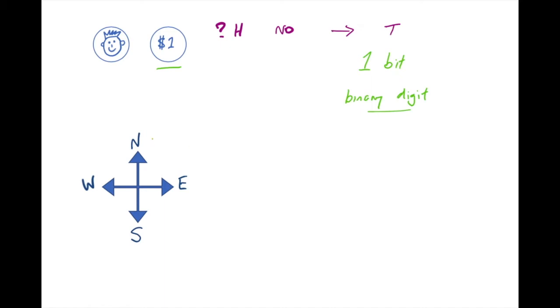Now what if there were four possibilities such as the points on a compass? I want to know which direction you're heading. Let me begin by asking are you heading north or south? And again you say no. That means that I've now narrowed it down to east or west but I need to ask another question.